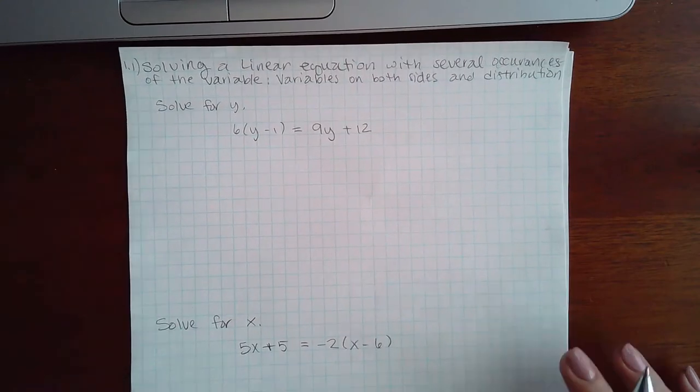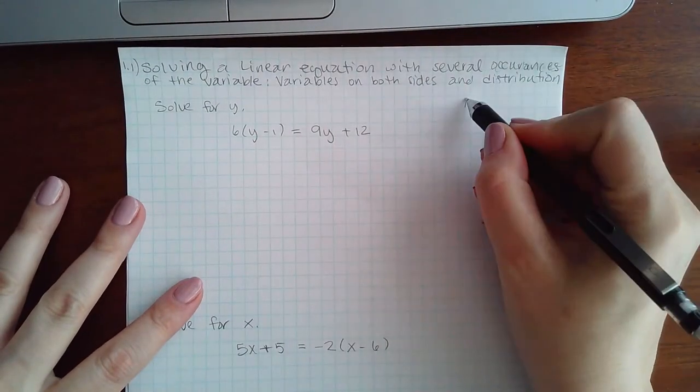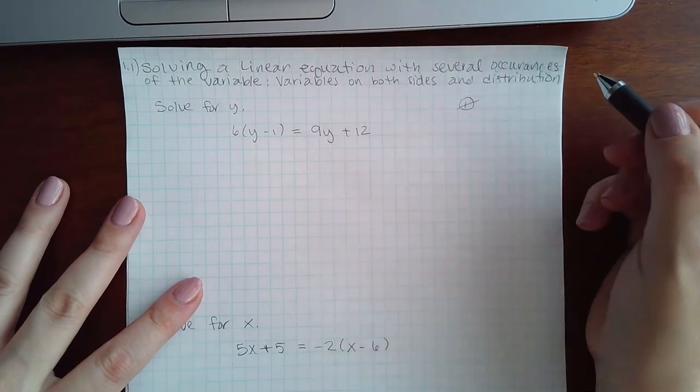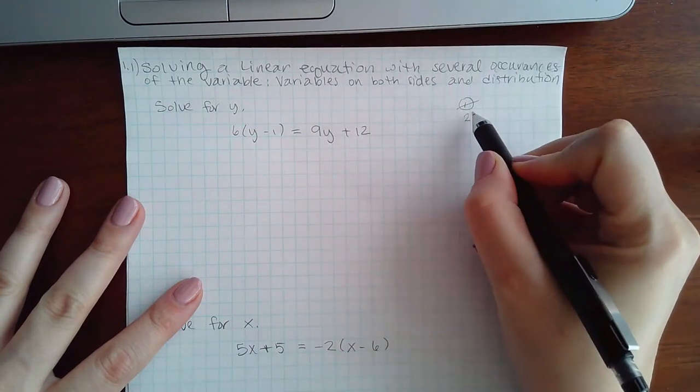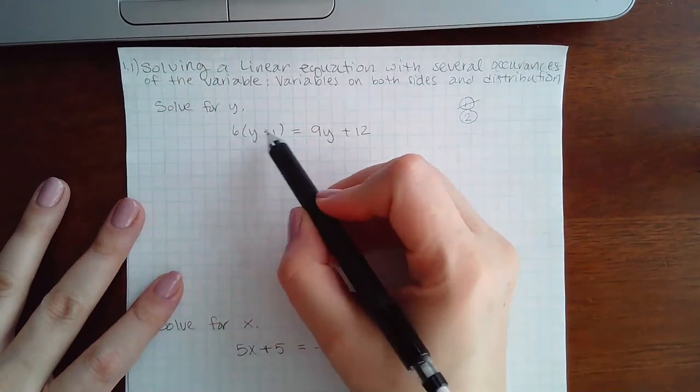The first problem says solve for y. So we need to follow our steps. The first step is to eliminate fractions, but we don't have any fractions. The second step is to eliminate parentheses, and we do have a parentheses here.